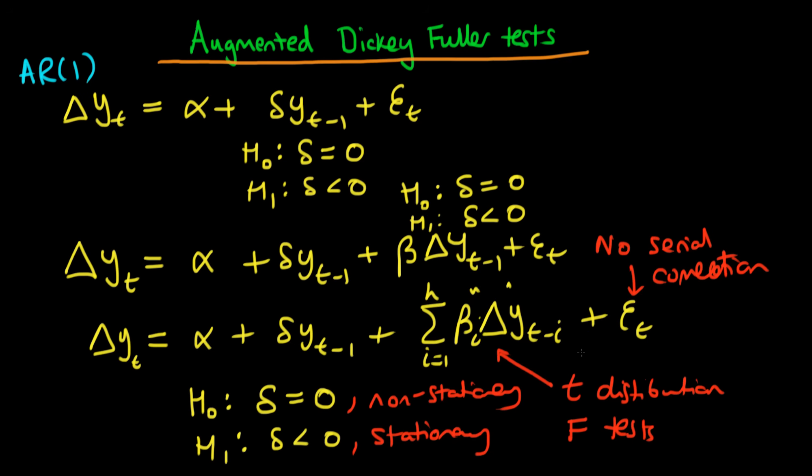That is symptomatic of the fact that we're probably dealing with a slightly more complicated process, so we need to include further lags. We want to continue adding these lags until standard tests suggest that we don't have any serial correlation in our error term, and then we can proceed as normal, testing the null hypothesis that delta equals 0 against the alternative that delta is less than 0.